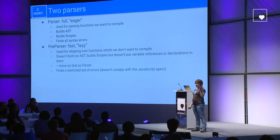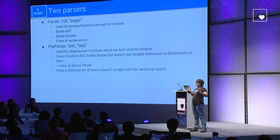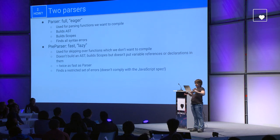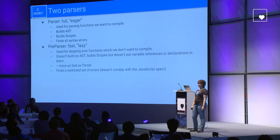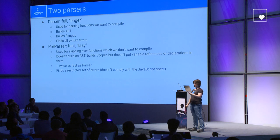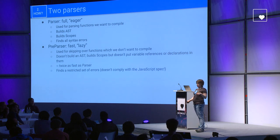Preparser, on the other hand, is the fast, lazy one. It's used for skipping functions we don't want to compile, at least not right now. It basically just finds where the function ends so we can carry on. It doesn't build an AST. It builds scopes, but it doesn't put variable references or variable declarations in the scopes. It's approximately twice as fast as the parser, and it only finds a restricted set of errors — it doesn't fully comply with the ECMAScript spec, but we are somehow getting away with it.